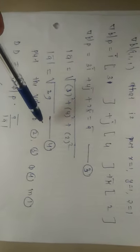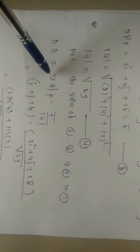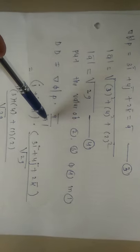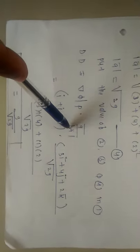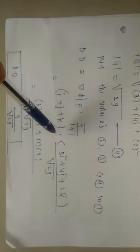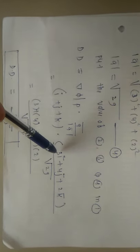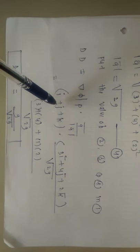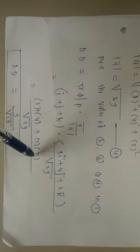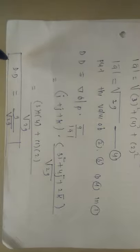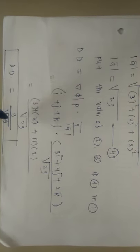Now put the values from equations 1, 3, and 4 into the directional derivative formula: D = ∇φ at P · ā / |ā|. That is (i + j + k) · (3i + 4j + 2k) / √29. Taking the dot product: coefficient of i is 1×3=3, coefficient of j is 1×4=4, coefficient of k is 1×2=2. Adding: 3+4+2=9, divided by √29. Hence, the final answer is directional derivative = 9/√29.